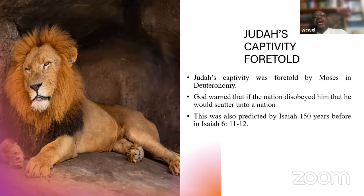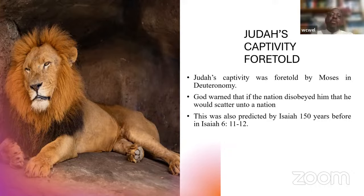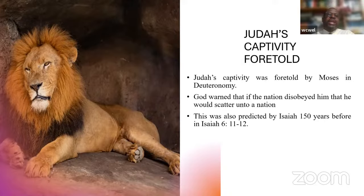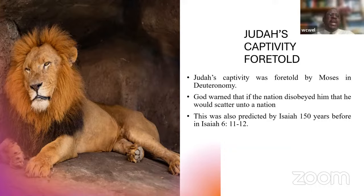The land that was split contained ten tribes in the north, loyal not to the household of David but to Jeroboam as their king. The northern kingdom of ten tribes was named Israel. Two tribes — along with the half-tribes — remained faithful to the house of David. Benjamin remained faithful, and Judah was the name for the southern kingdom, with the half-tribes of Manasseh and Ephraim remaining faithful to the house of David.